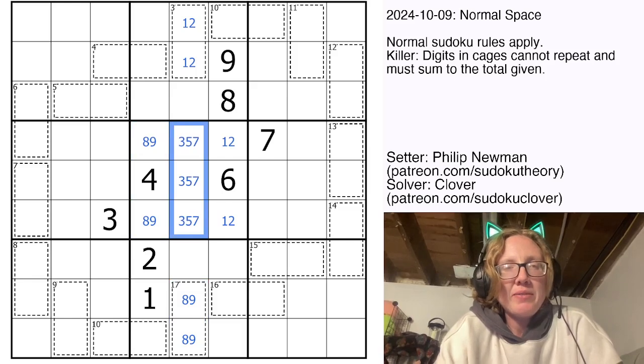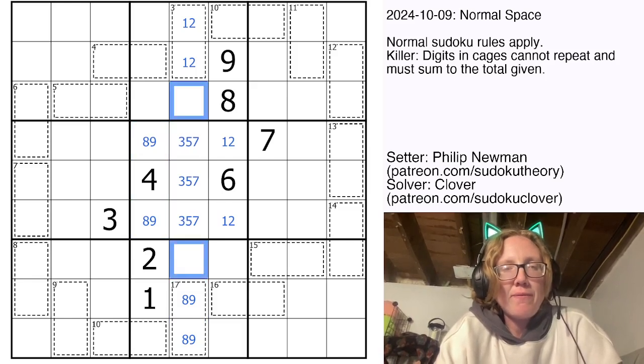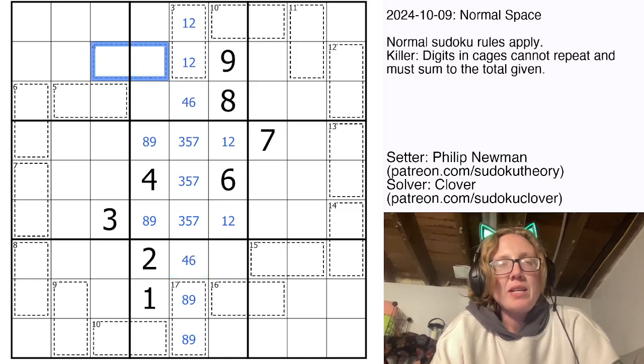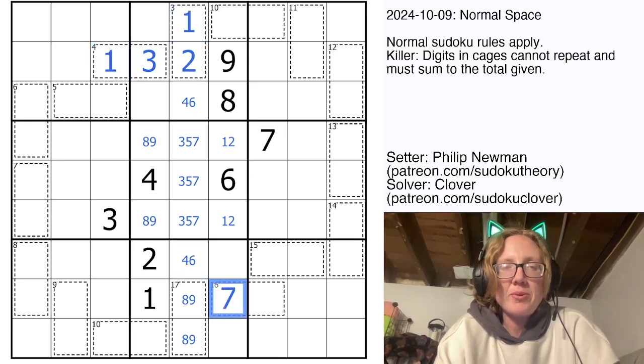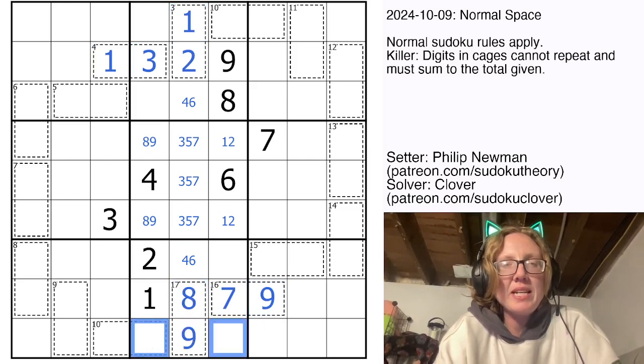That's going to give us a 3, a 5, and a 7 here, and a 4 and a 6 in these cells. Now if you look at this 4 cage, this has to be 1 plus 3. The 1 can't be here because there's already a 1 in this region, so that's a 3 and a 1 which resolves the 1 too. Similarly, 16 is always 7 plus 9. They have to go in that order. And there is the 8 and the 9.